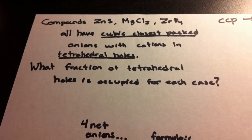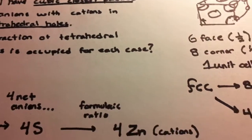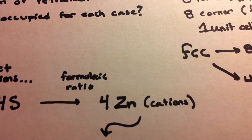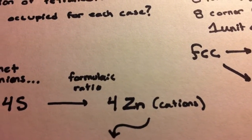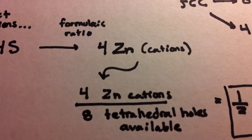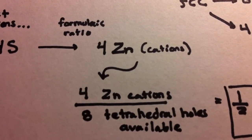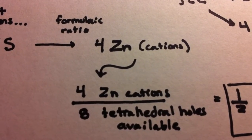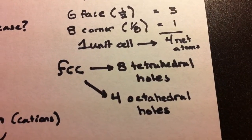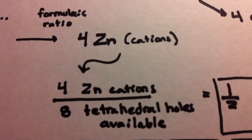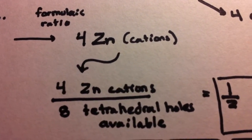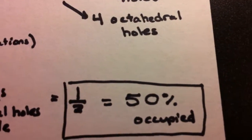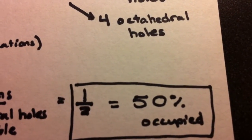The fraction of tetrahedral holes occupied refers to how many tetrahedral holes are occupied by the cations — it's the number of cations over the number of tetrahedral holes available. The number of tetrahedral holes available is eight. So in this case, it's four cations over eight tetrahedral holes, which comes out to one-half, or 50% occupied.